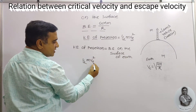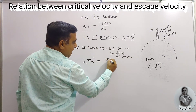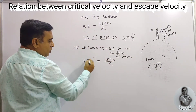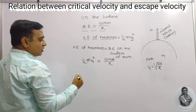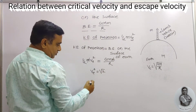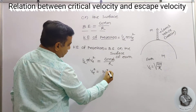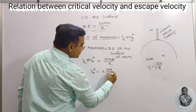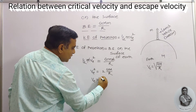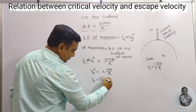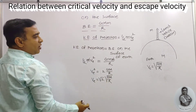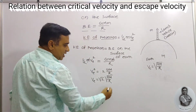Substituting the values: ½m·ve² = GMm/R. The small m on both sides cancels. This gives ve² = 2GM/R, and therefore ve = √(2GM/R). We know that √(GM/R) is nothing but the critical velocity vc, so we have obtained the relation.